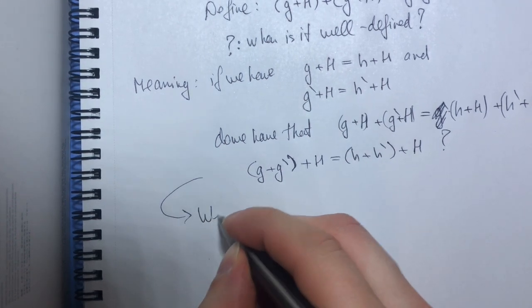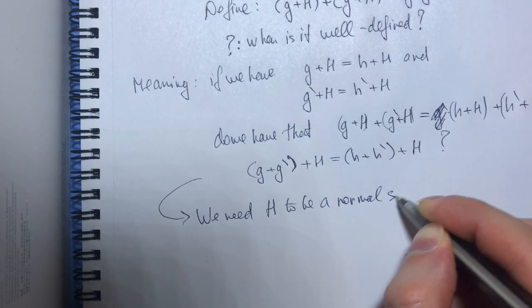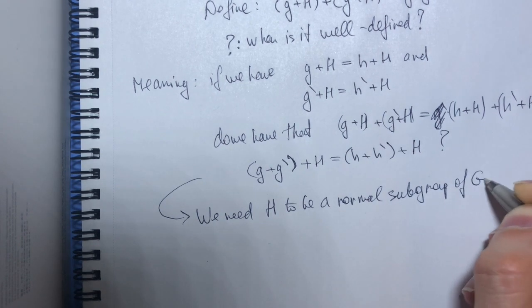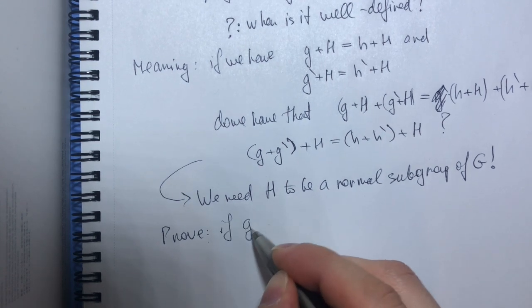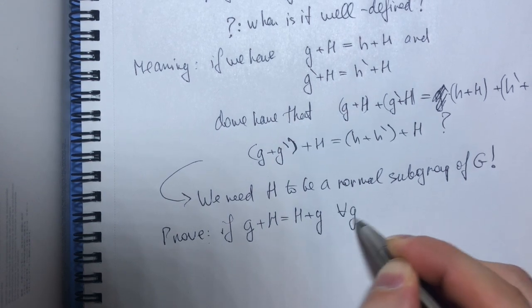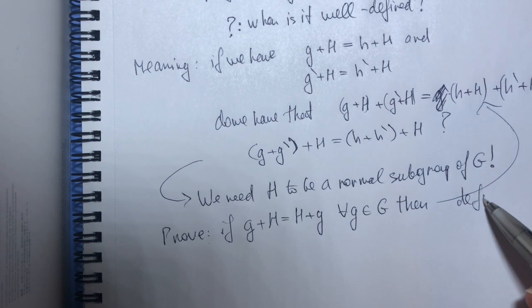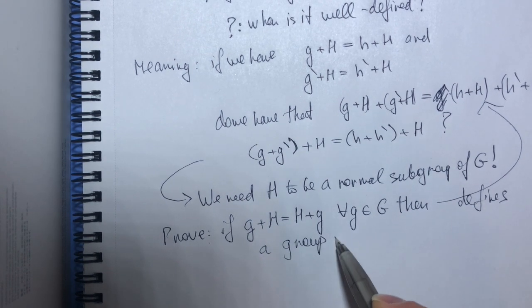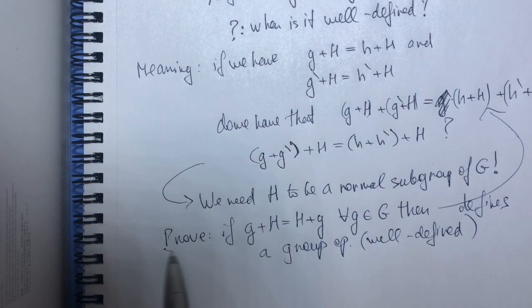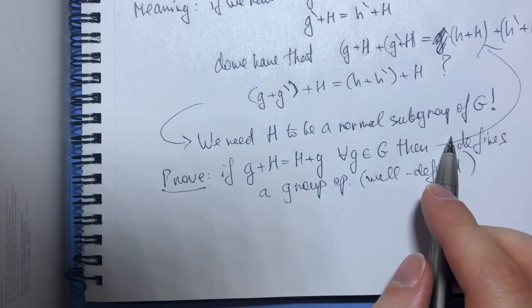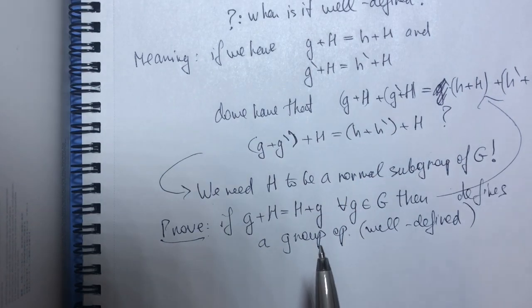So it turns out that we need H to be a normal subgroup of G. So what you want to prove is that if g + H equals H + g for all g in G, then this defines a group operation which is well-defined. So I will leave this proof to you and it is also true - the reverse direction is also true - so if you somehow have this operation that's well defined then your group H is necessarily normal. So try to prove that as well.